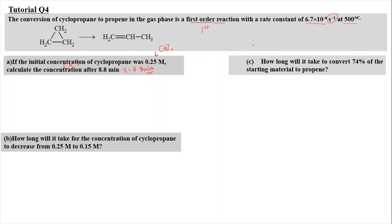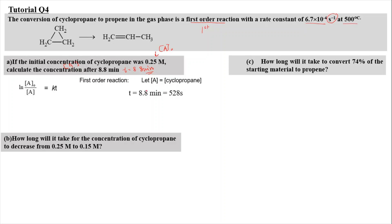Since it is a first-order reaction, we're going to use the integrated rate law for the first-order equation, where ln(A0/A) equals KT. Here A is equal to the concentration of cyclopropane. First, we change the time from 8.8 minutes, which is equivalent to 528 seconds, by multiplying by 60 seconds.